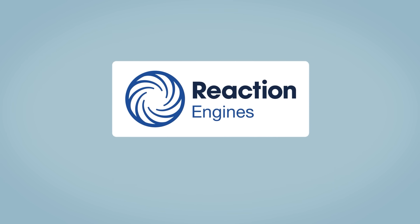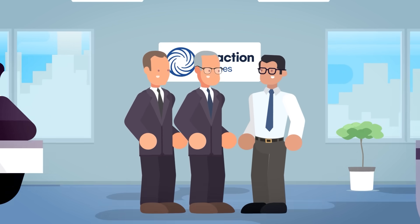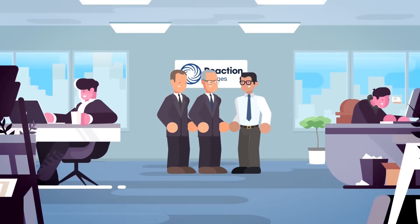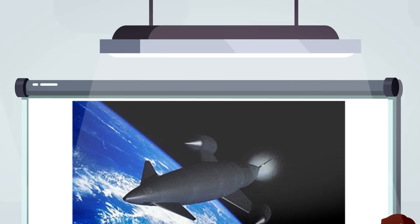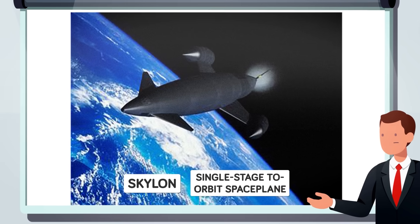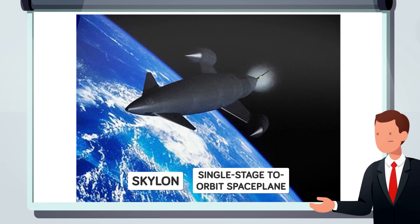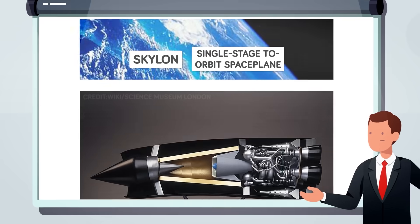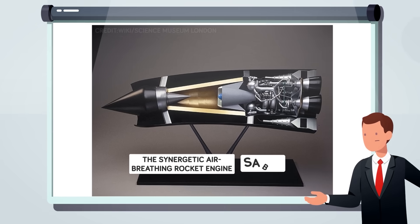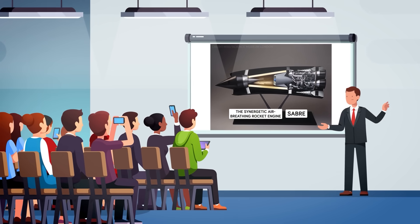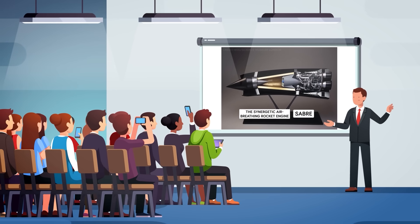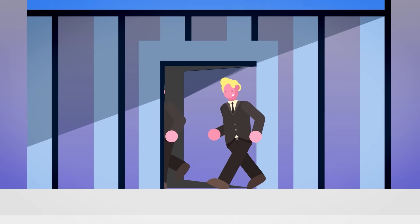Reaction Engines, a British aerospace company founded by three engineers following the cancellation of a British space plane project in 1989, intends to create Skylon, a single-stage to orbit space plane. They're also designing an engine to power it. The Synergetic Air Breathing Rocket Engine, or Sabre, is a hydrogen-powered engine intended to use the oxygen in Earth's atmosphere to propel a space plane to hypersonic speeds before blasting off into space much in the style of a conventional rocket.